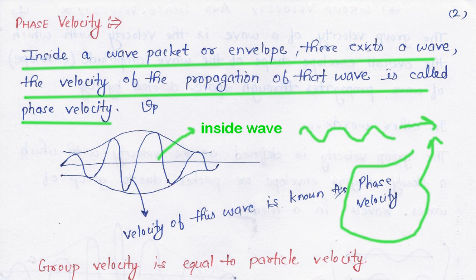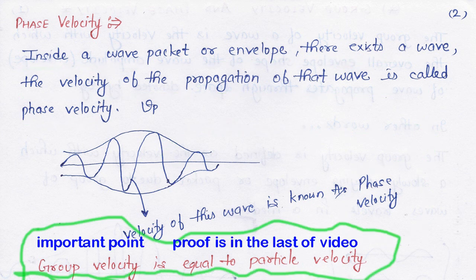Inside a wave packet or envelope, there exists a wave. The velocity of propagation of that wave is called phase velocity. Inside the wave packet, there is a wave whose amplitude varies according to the wave envelope. This wave also propagates in the same direction as the wave packet. The velocity of this wave is called the phase velocity.